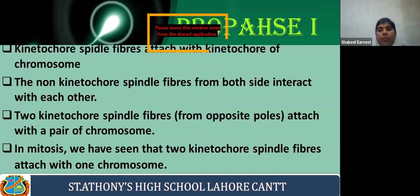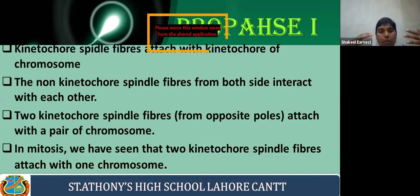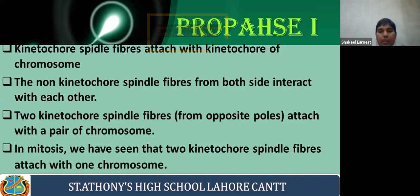Kinetochore fibers attach to the kinetochore protein of the chromosomes. Non-kinetochore spindle fibers interact with each other. Two kinetochore spindle fibers attach to a pair of chromosomes. This is a difference between mitosis and meiosis — in mitosis, kinetochore spindle fibers attach differently to the two chromatids compared to meiosis.